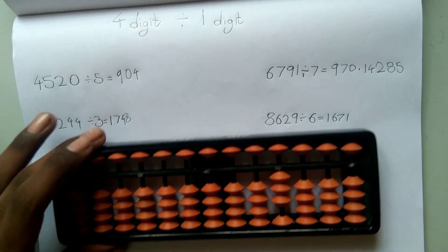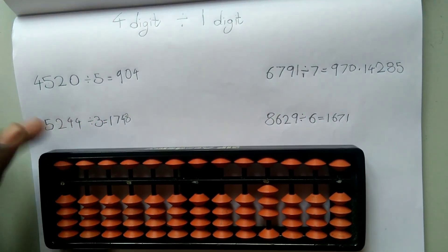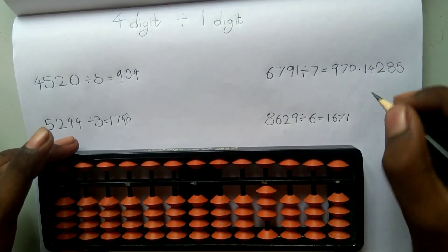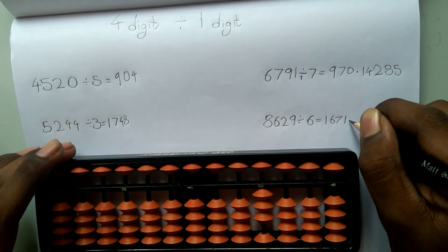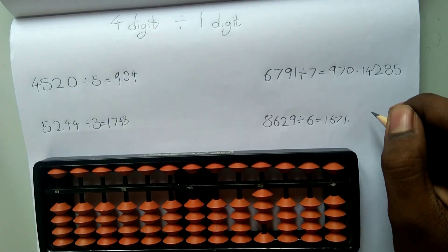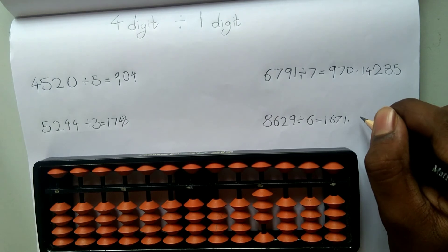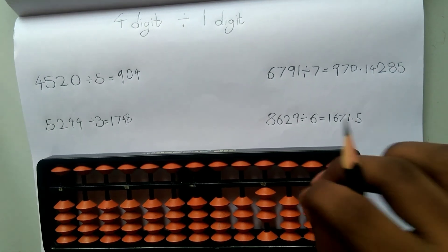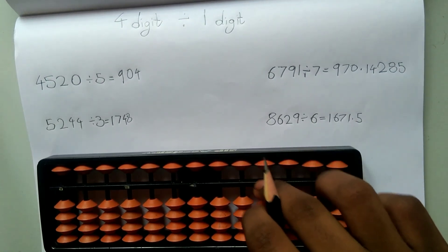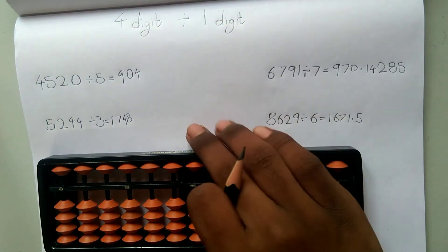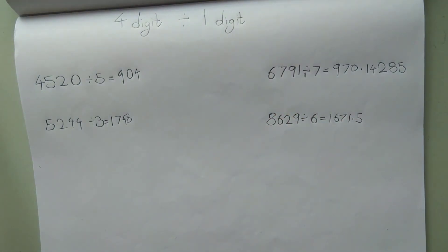I have a remainder of 3. If I place a 0 beside 3 it becomes 30. Let me keep a decimal point. 6 into what is closest to 30? 6 fives are 30. If we subtract 30, there is no remainder — so this is an exact answer. The final answer is 1471.5.